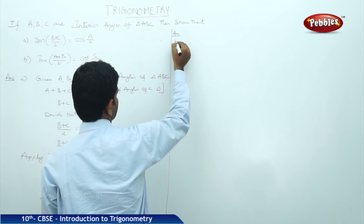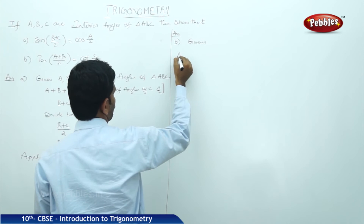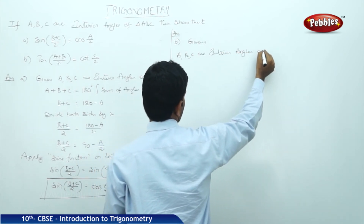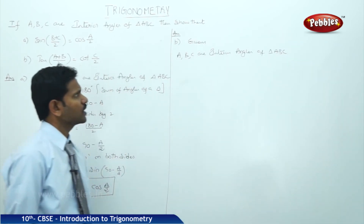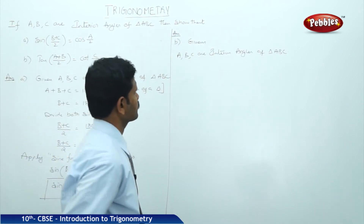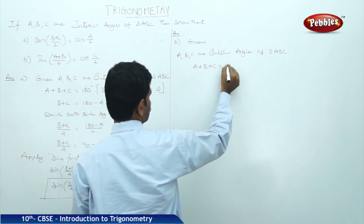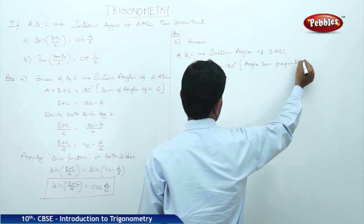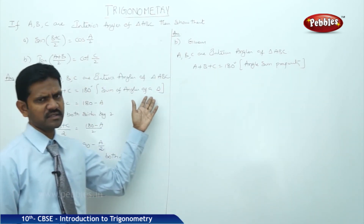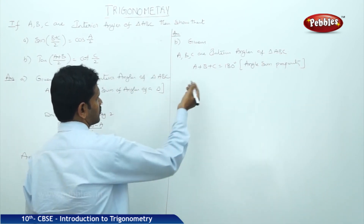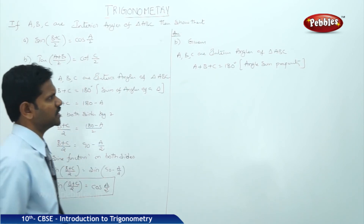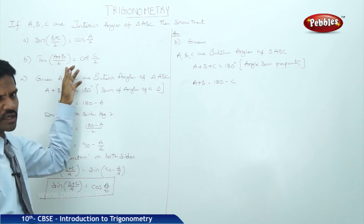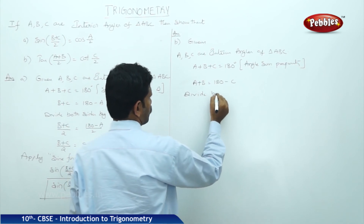Answer to part B. Given: A, B, C are interior angles of triangle ABC. A + B + C = 180 degrees, by the angle sum property. In the second question, A and B are grouped. So A + B = 180 - C. And A + B is divided by 2. Divide both sides by 2.